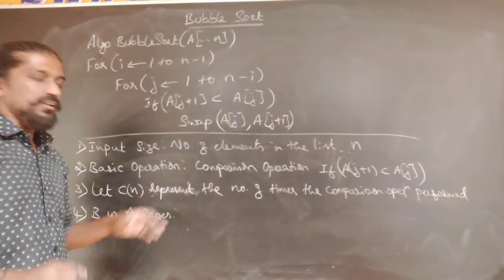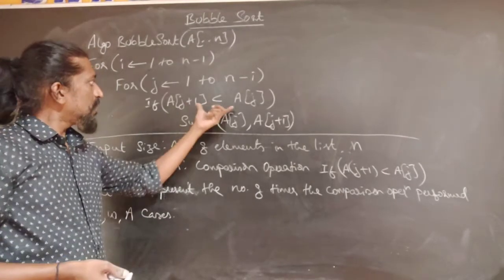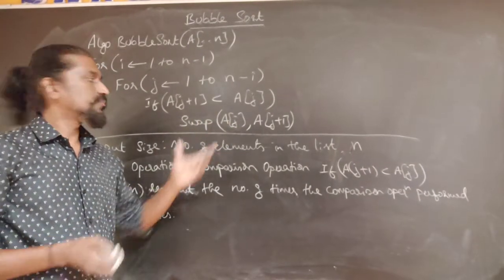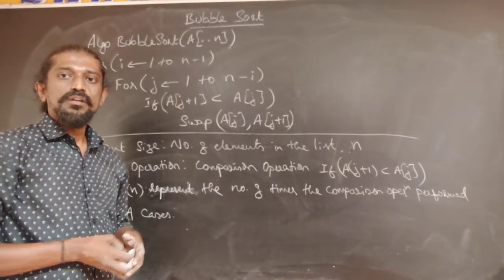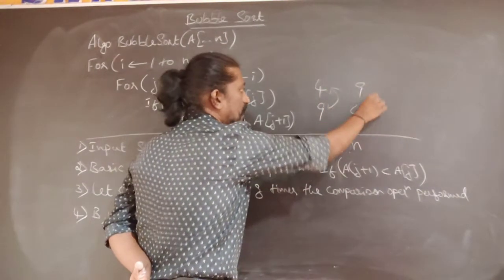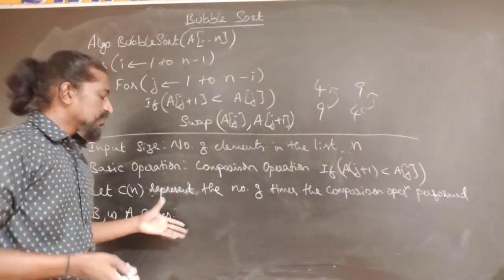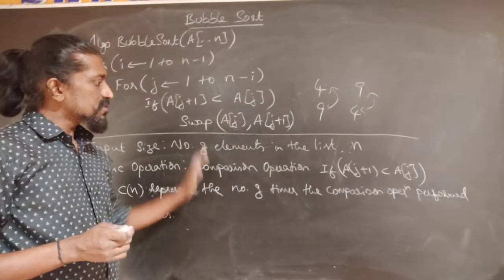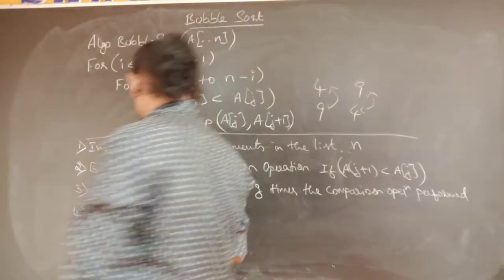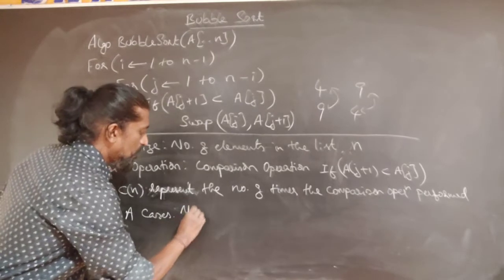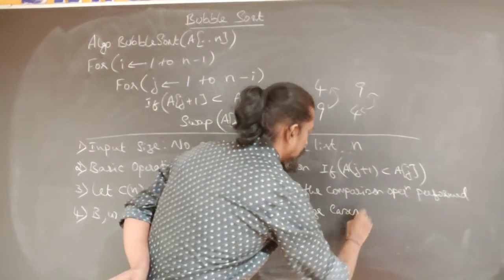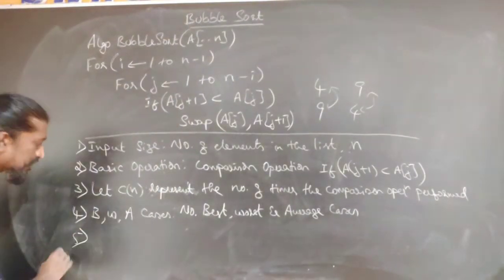Next we check whether this algorithm has best, worst, and average cases. We can notice that whether the elements are in order or out of order, the comparison operation will always be performed — the only difference is whether the swap follows. Since we have chosen the comparison as the basic operation, it is performed regardless. Therefore, this algorithm does not have distinct best, worst, and average cases — all three cases are the same.